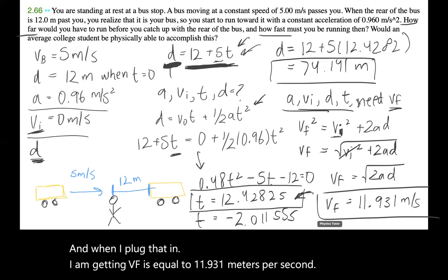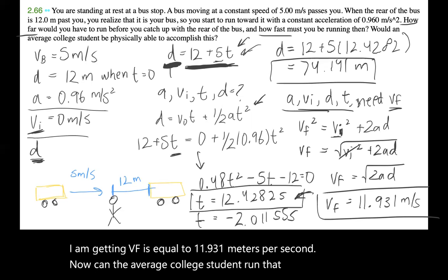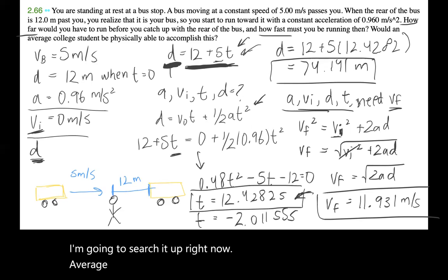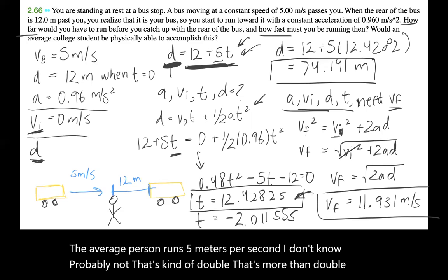Now, can the average college student run that fast? I don't know. I'm going to search it up right now. Average college student running speed. Okay, so it says this is in miles per hour; we want it in meters per second. Well, the average person runs five meters per second. I don't know, probably not. That's kind of double, that's more than double. So I don't know, I'll leave that up to you.